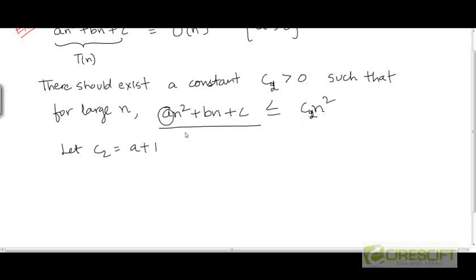Can we prove that an² + bn + c is less than or equal to (a+1)n² for large n? Well, for this inequality to hold, we can take the terms on the left-hand side towards the right.